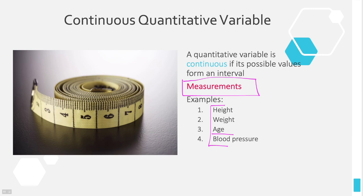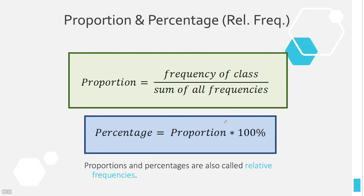Blood pressure is usually given as a whole number value, but it could be measured more precisely. For proportion and percentage — which are great for categorical variables — you take all the frequencies of all categories as your denominator. For example, if your population is cars in a parking lot and the color is your variable, you might count five red cars in a parking lot of 37 vehicles. Five thirty-sevenths would be your proportion, and then you multiply the proportion by 100% to get the percentage.